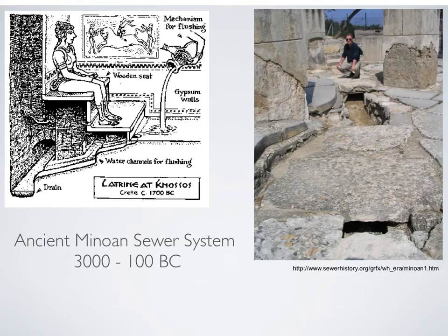To provide an example, here we've got a cartoon illustrating an ancient Minoan sewer system where effectively you have a toilet seat, water used for flushing, and waste materials going into a drain. There's also a picture on the right-hand side looking at these drains in modern times. Clearly, people even back then were concerned about trying to separate feces and other waste materials away from water supplies and away from their daily lives.